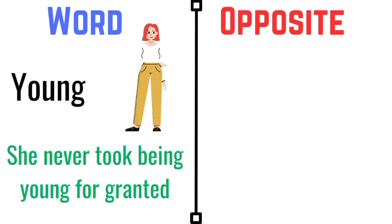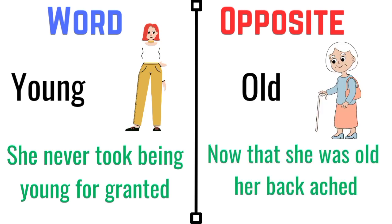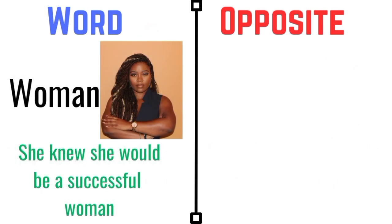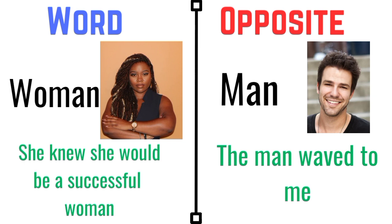Young. She never took being young for granted. The opposite of young is old. Now that she was old, her back ached. Woman. She knew she would be a successful woman. The opposite of woman is man. The man waved to me.